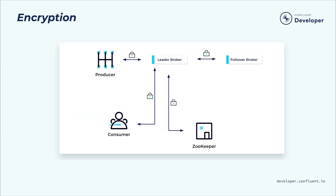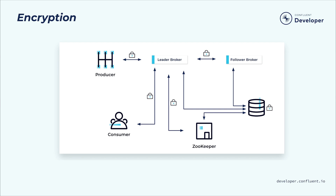But at certain points in its journey, this data will also come to rest. Kafka, for example, makes it durable by writing to disk. So you should also consider encrypting this data at rest to protect it from anyone who gains unauthorized access to the file system on the brokers.